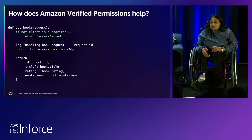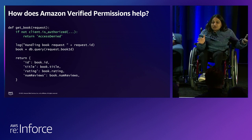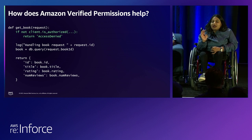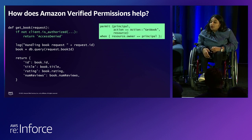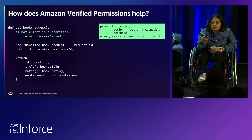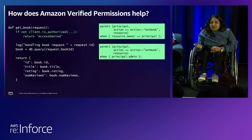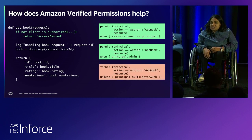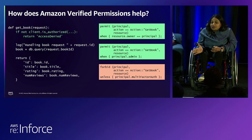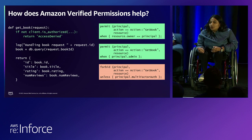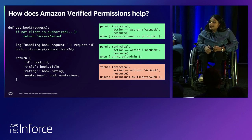So how does Verified Permissions help? All that messy permissions code can be replaced with a couple of lines — a call to Verified Permissions. All the rules are now specified as policies. You can see that if you are a resource owner or an admin you get access, but access is forbidden if not multi-factor authenticated. We know order doesn't matter in policy evaluation, and a forbid statement trumps an allow — just like AWS IAM works.